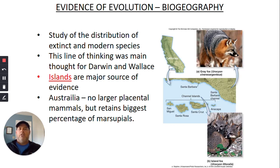Moving on to another idea here, biogeography. This is the distribution of species around the planet. This was a big part of the thinking of both Darwin and Wallace. How is everything distributed? What's the reason for why you find certain things on the world, in certain parts of the world and other things not. So islands were used as a lot of evidence for this, like the Galapagos islands, right? In Australia, Australia is an island. And it has no larger placental mammals. There are no big mammals on Australia, but it retains the biggest percentage of marsupials.